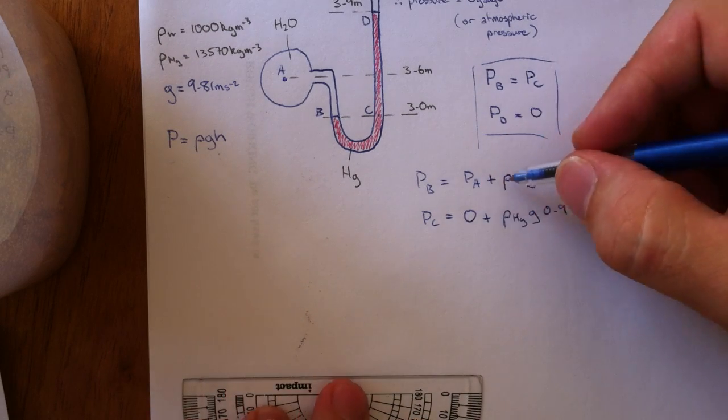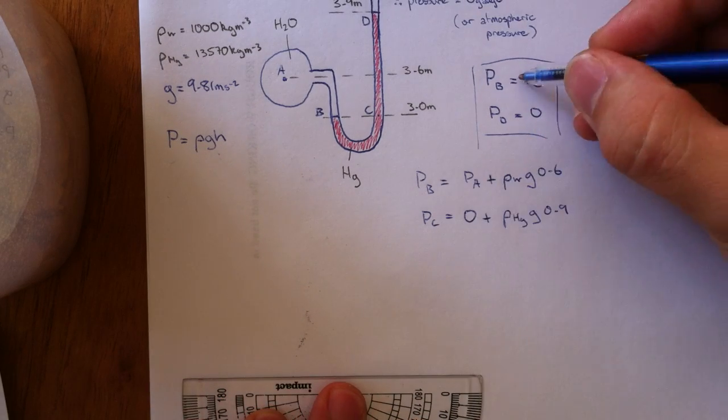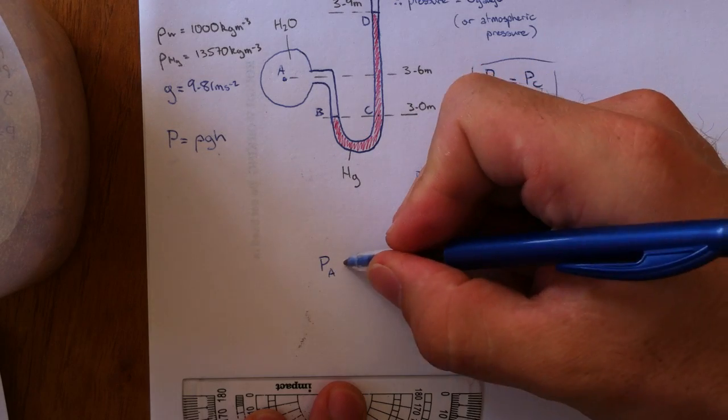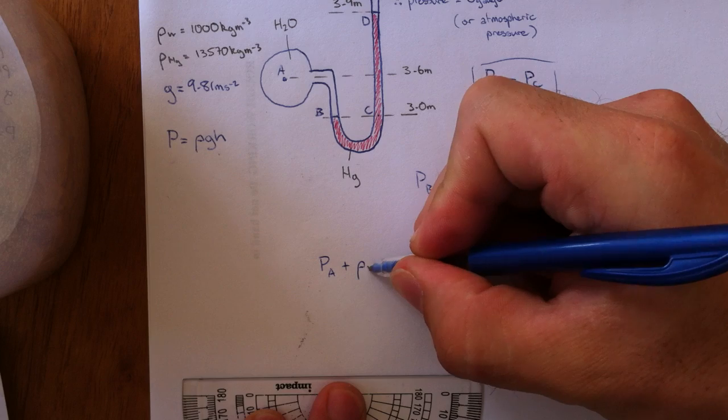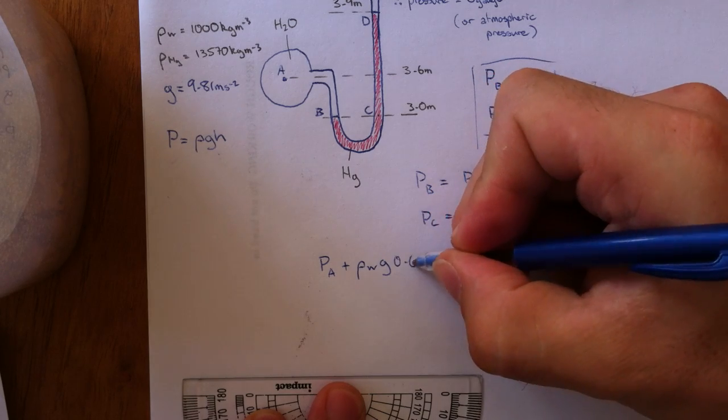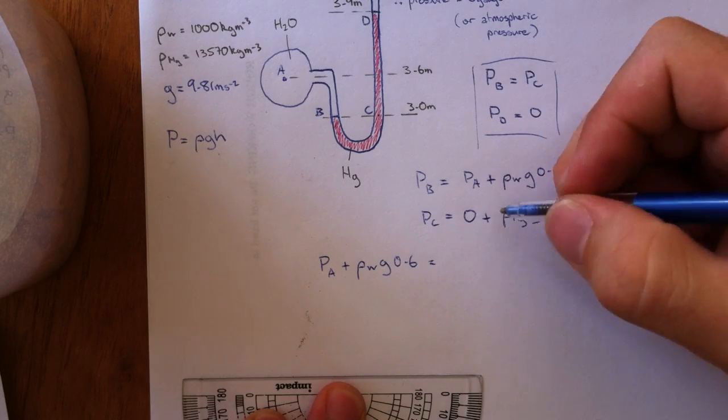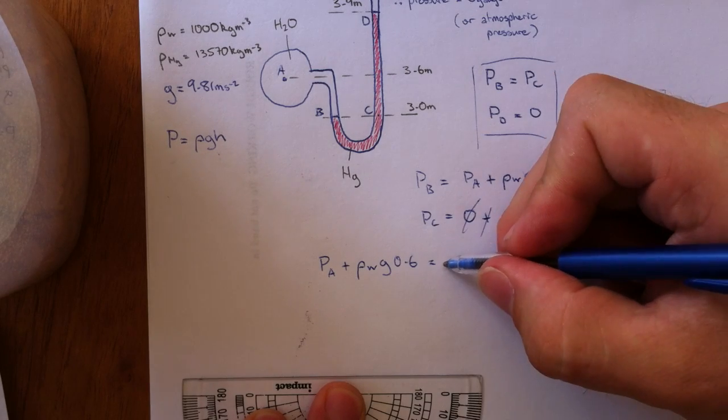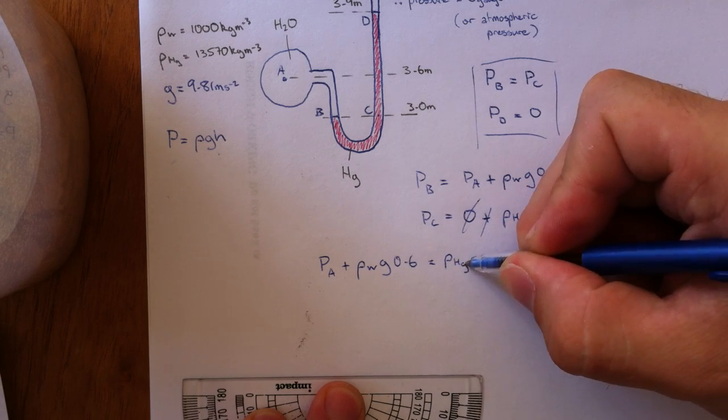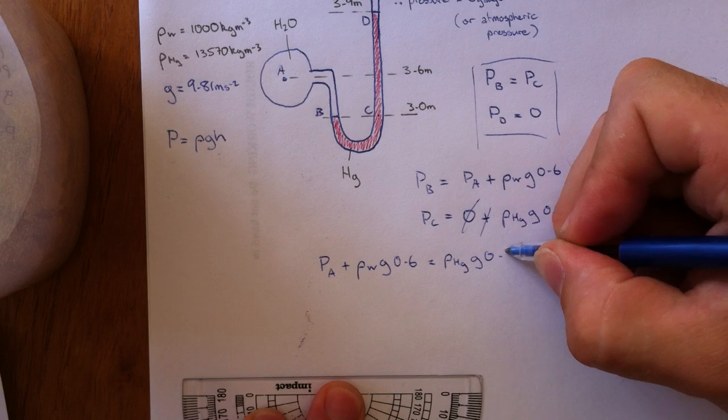So we'll just say PB equals PC, so PB pressure at A plus density of water times gravity times 0.6 equals, that's just zero so we'll get rid of the zero, density of mercury times gravitational acceleration times 0.9.